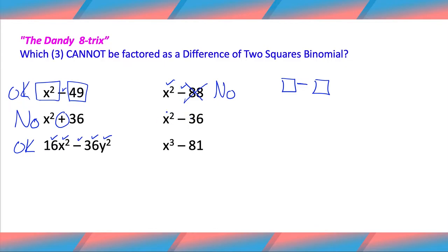x squared minus 36. Square, square, and a difference. You count. x to the third power. Nope. You are not a square. Sorry. So this one's going to be a no. Oh, by the way, this one's okay. I forgot to say that.